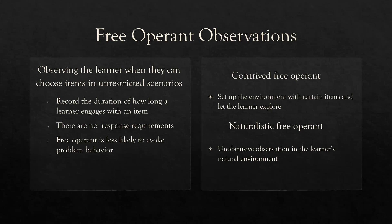The two main types of free operant are contrived and naturalistic. In contrived free operant, you're actually setting up the environment — placing certain items and letting the learner explore. Even though it is contrived, there are still no response requirements and you're not manipulating anything during the observation; all you're doing is choosing which items to put in the environment, while still giving them the chance to freely move about. Naturalistic is the most unobtrusive: you simply place the learner in their environment, watch, and record — without even setting up or selecting items — just letting them go unobstructed.